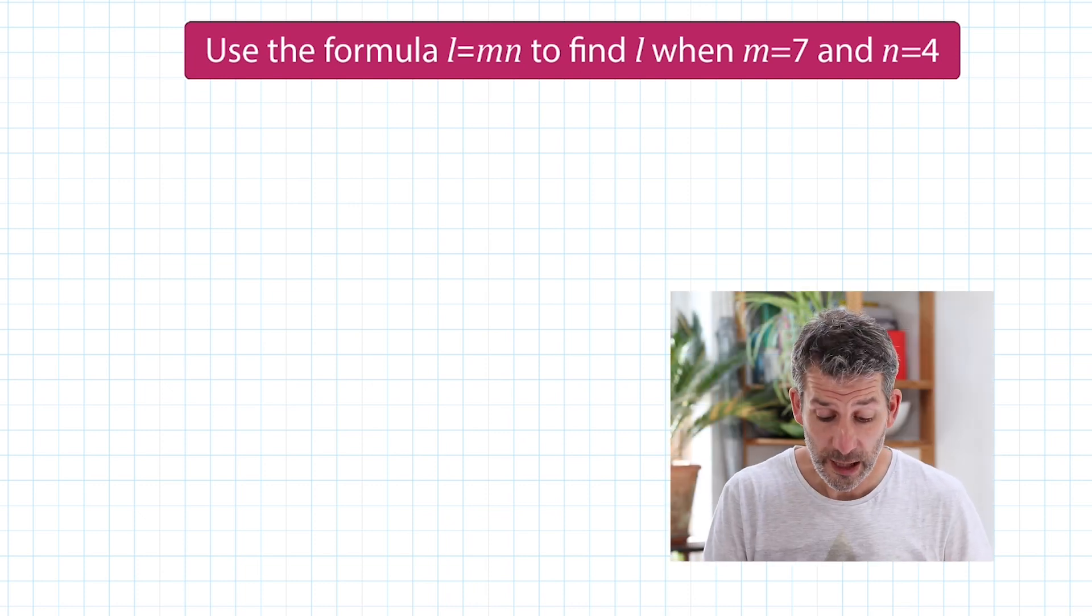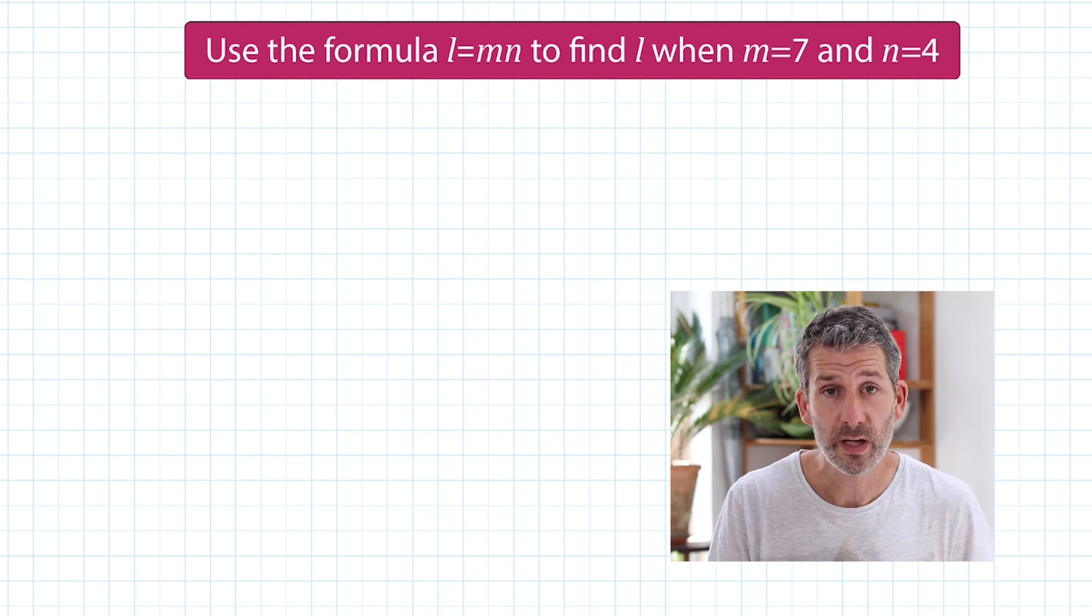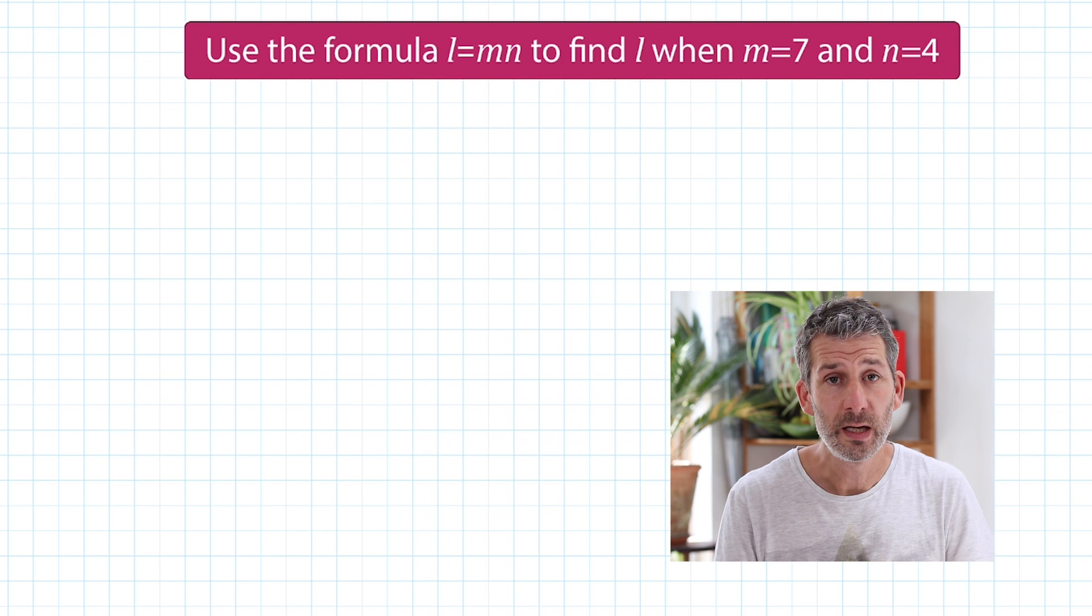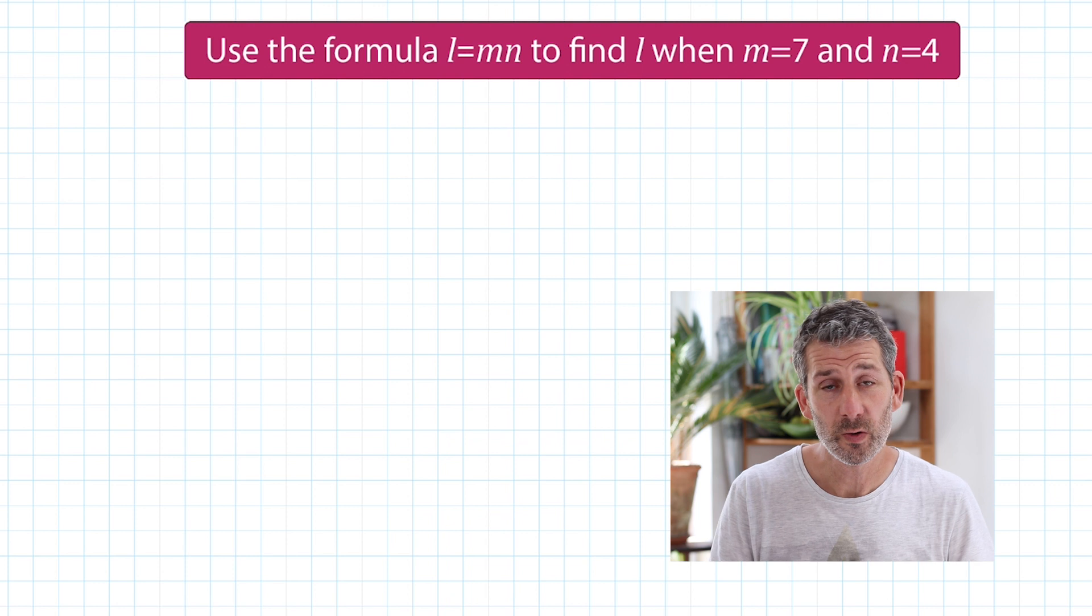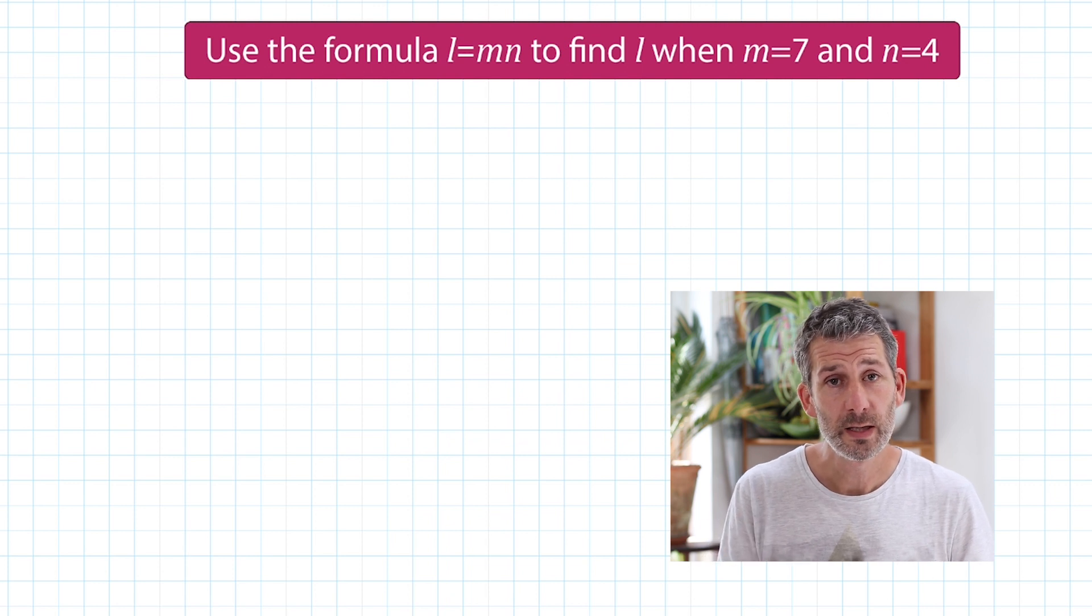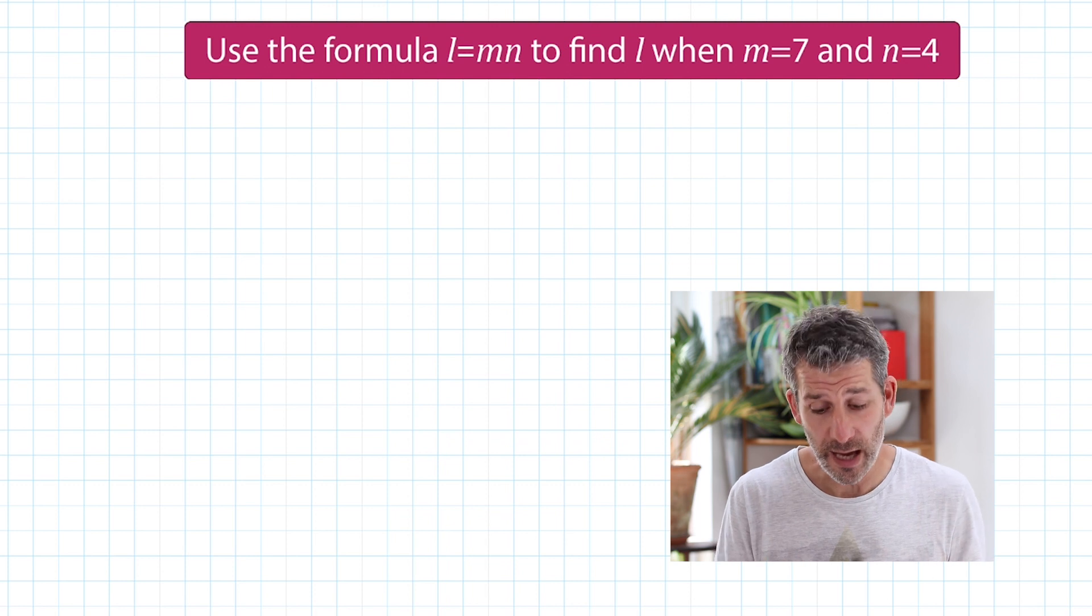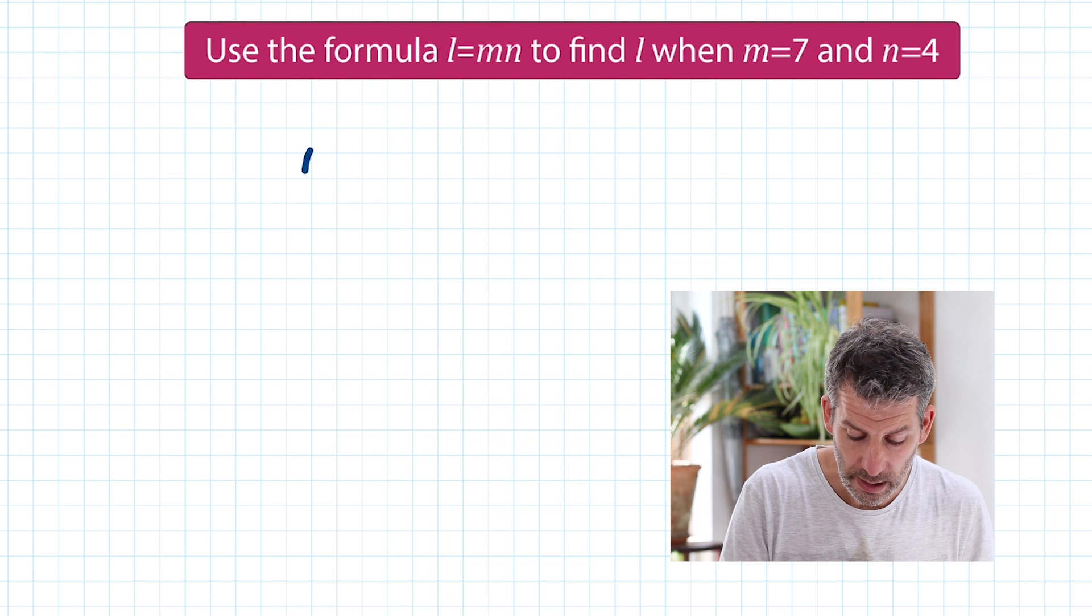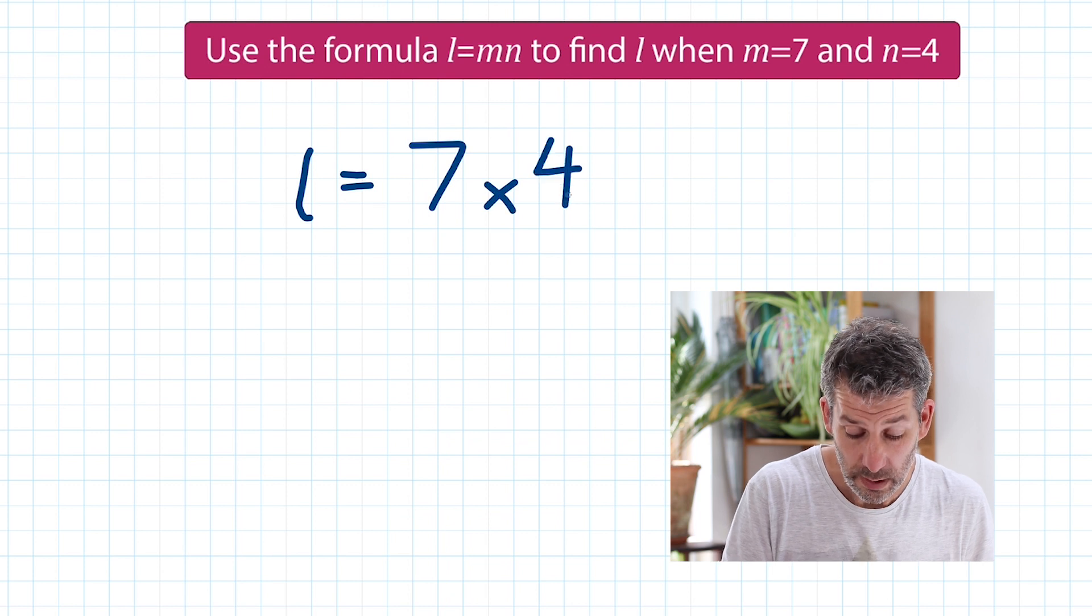Use the formula L equals MN to find L when M equals 7 and N equals 4. Well, when we have MN written like that, it means M times N. So to find out what L is, all we have to do is multiply M times N. And the question is telling us which numbers we should use for M and N. So M is 7, N is 4. So we just write it out like this. L equals, so 7 times 4, which is 28.